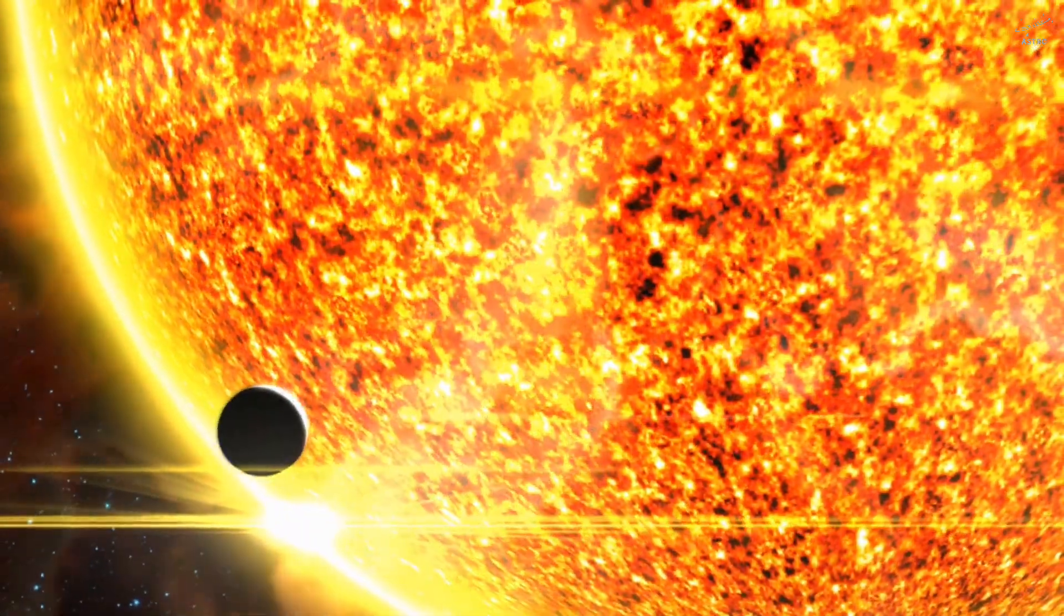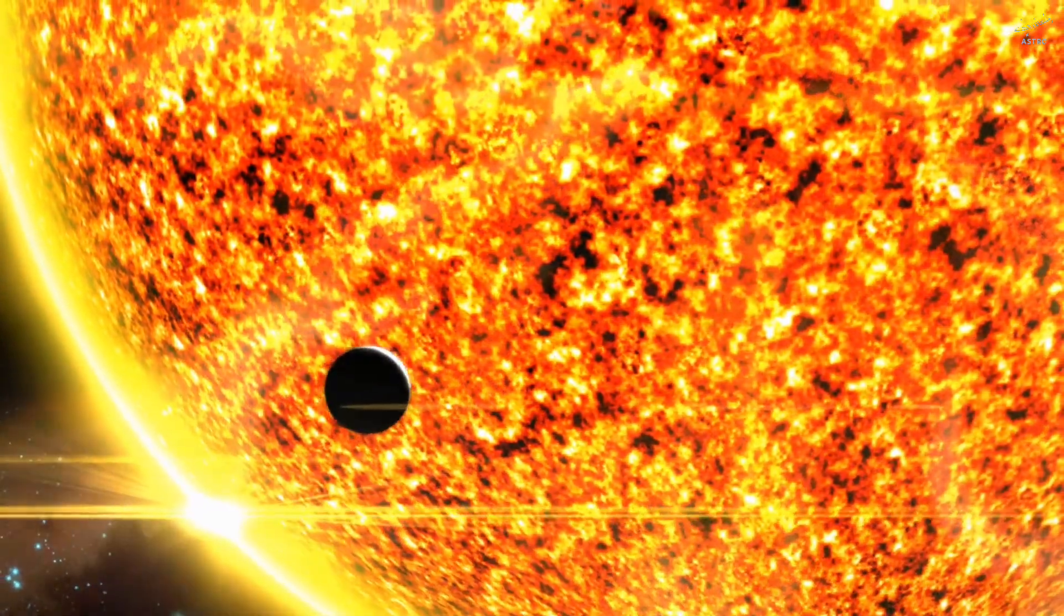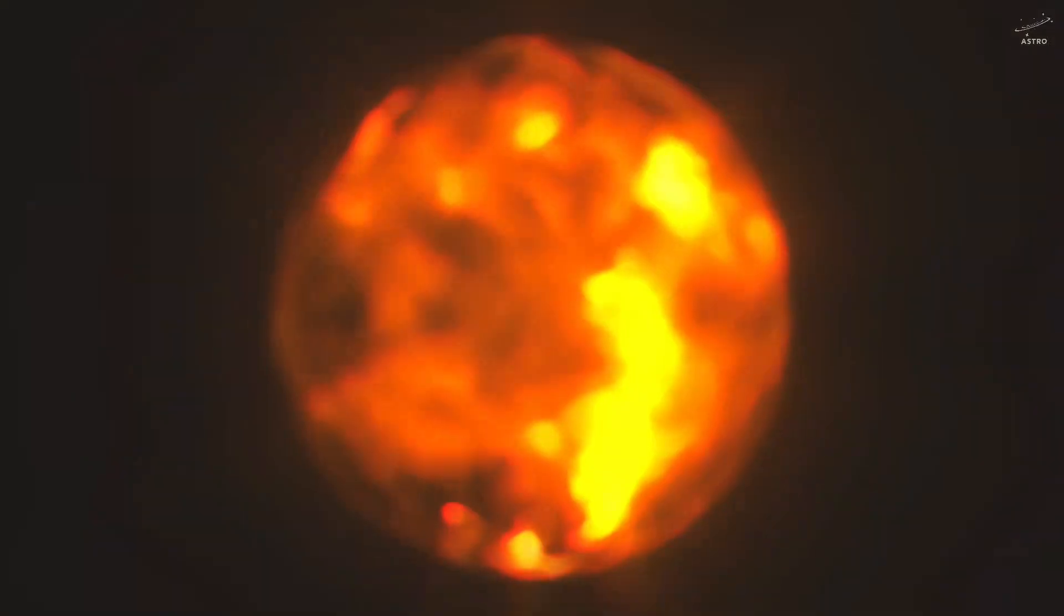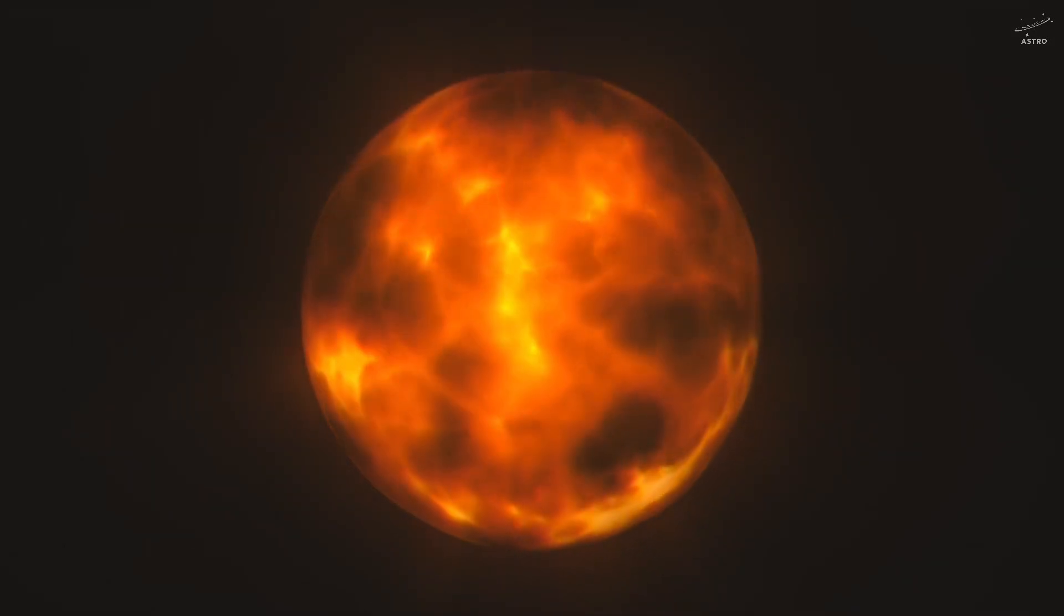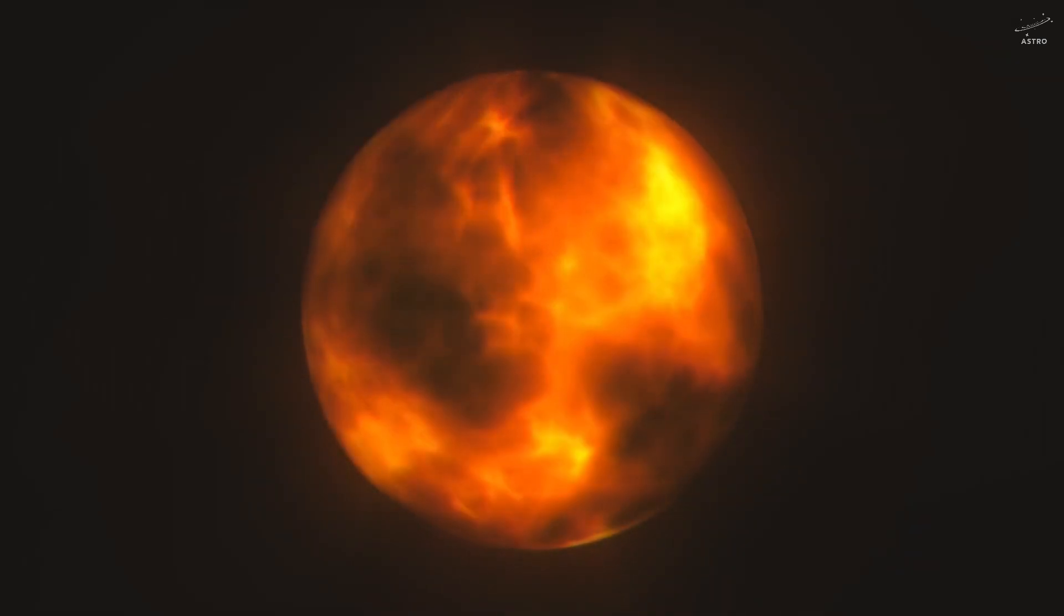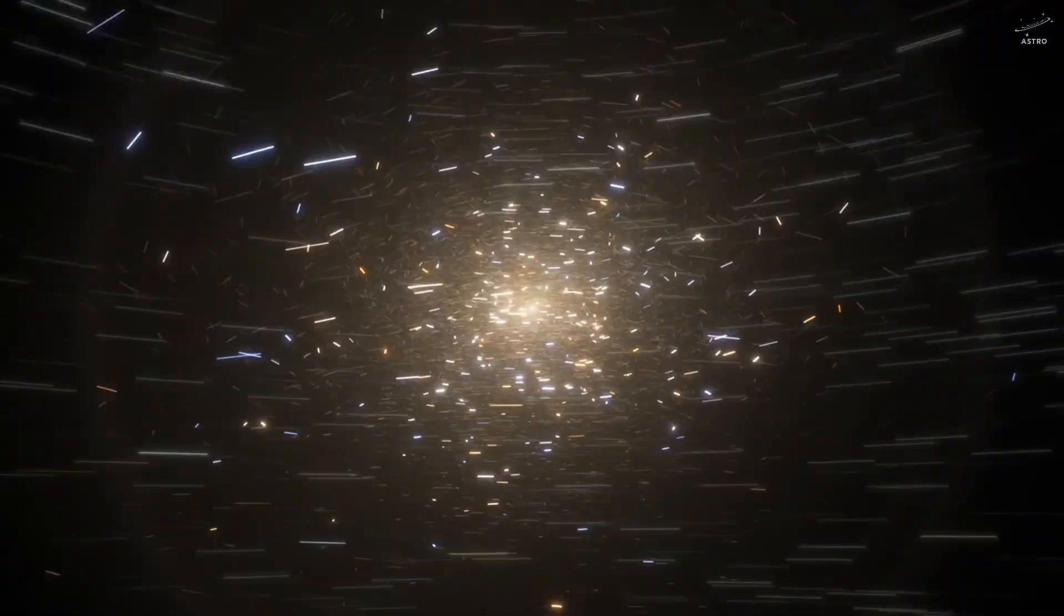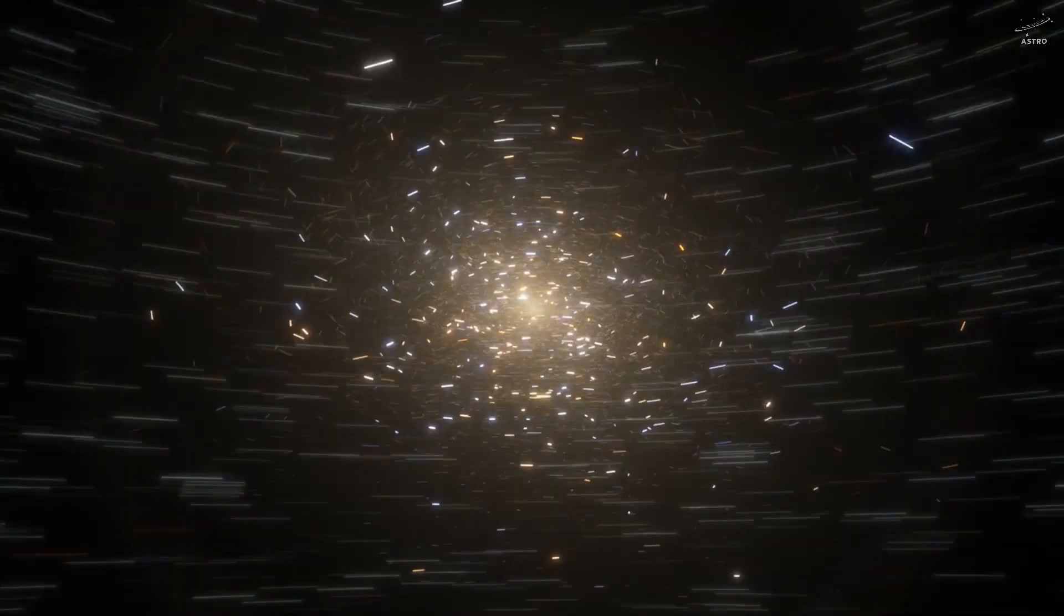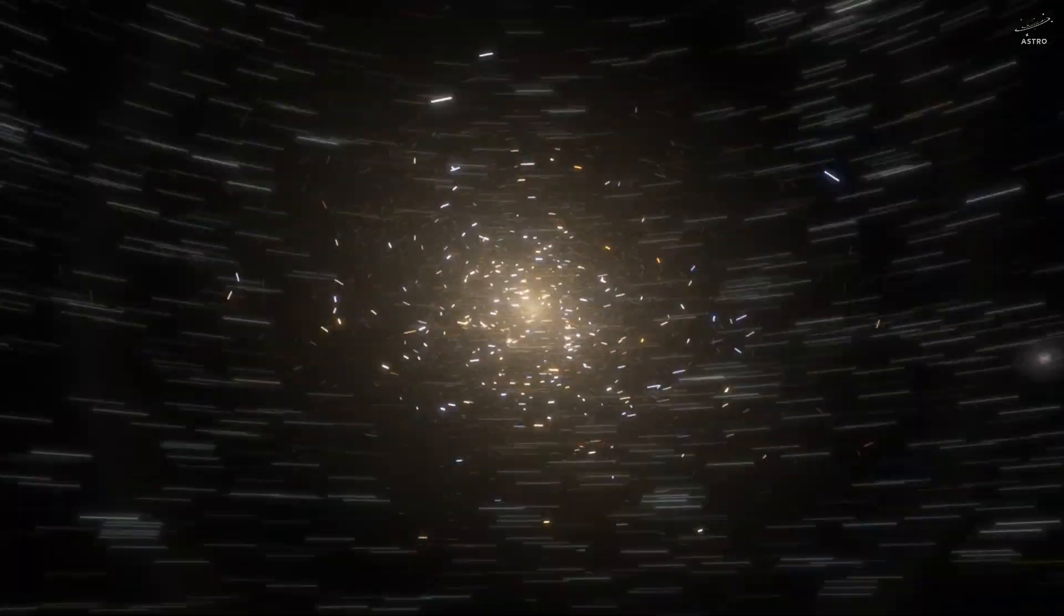And deep within that ocean of light, Mercury keeps orbiting. It becomes a ghost, drifting through the very heart of a star. It doesn't vanish, not instantly. Instead, it begins to unravel. Its rocky crust starts to melt. Its iron core begins to vaporize. But this isn't the end, not yet. This slow decay could take tens of thousands of years, maybe hundreds of thousands.